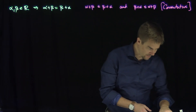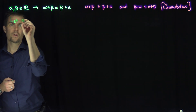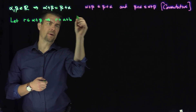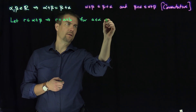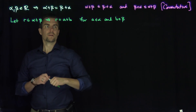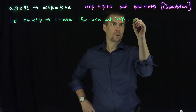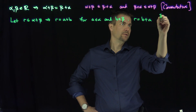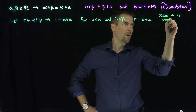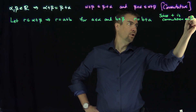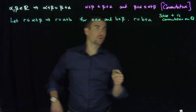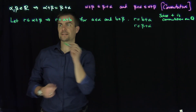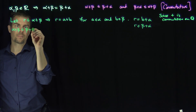So let's do it. This is going to be a very symmetric proof. I'm going to let R be in the set alpha plus beta. This implies that R is equal to A plus B for A in alpha and B in beta for some pair. That also tells me R is equal to B plus A, since addition is commutative on the rationals — since plus is commutative on Q, which we proved from our construction of the rational numbers. So R has the form of something in beta plus something in alpha, meaning R is in beta plus alpha. So we've established that alpha plus beta is a subset of beta plus alpha.